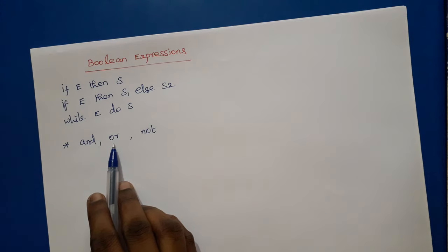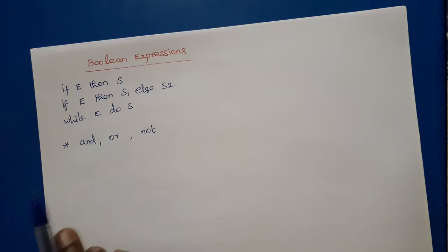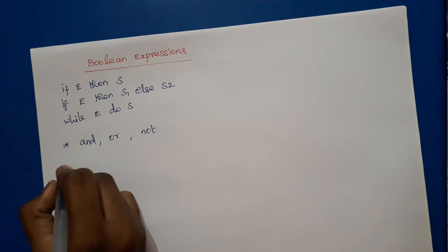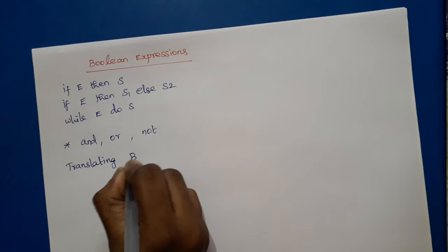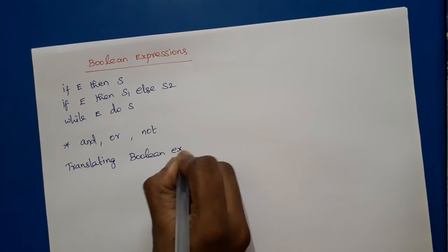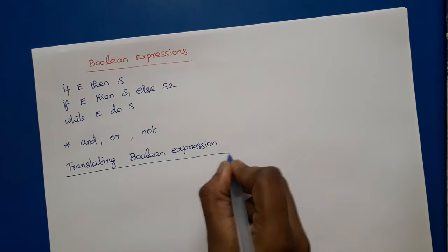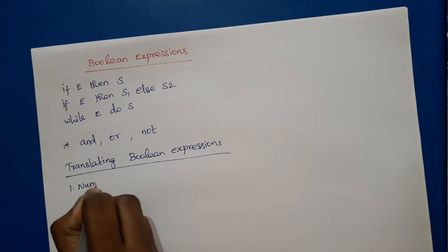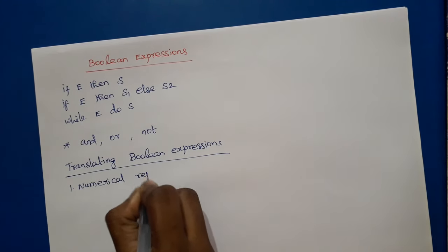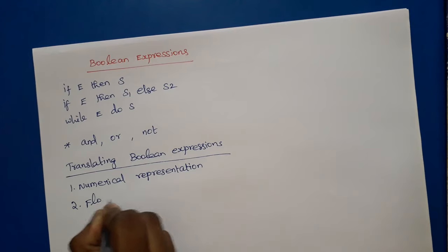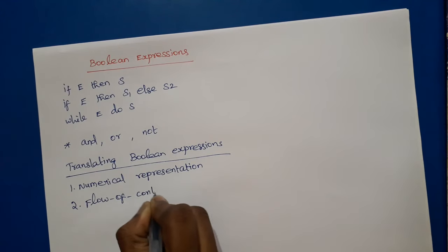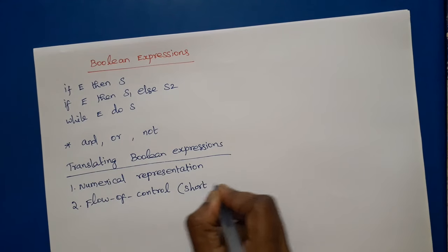We should know about the translation scheme for Boolean expressions — that is, how to translate Boolean expressions into three-address code. There are two methods: one is numerical representation, and another one is the flow of control method, which is otherwise called the short-circuit method.